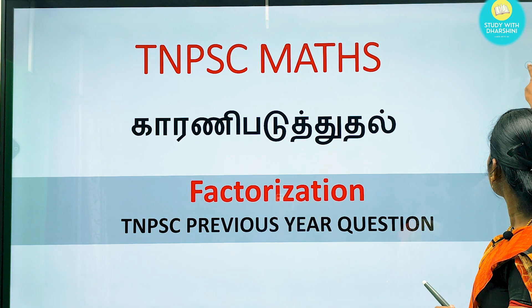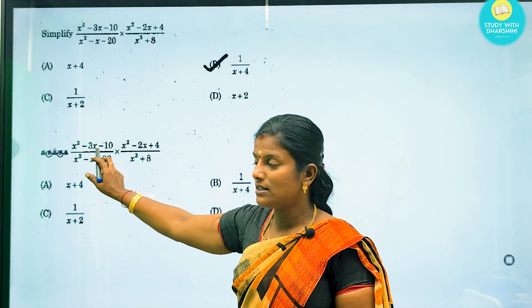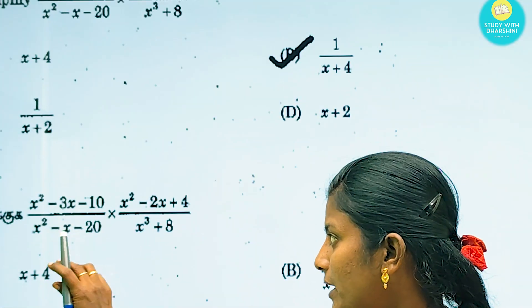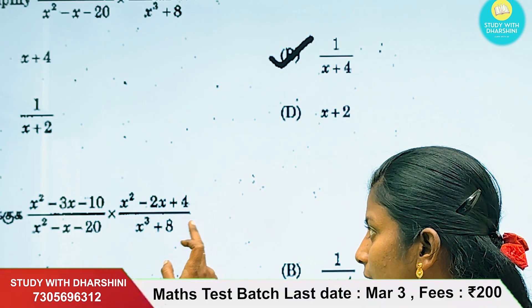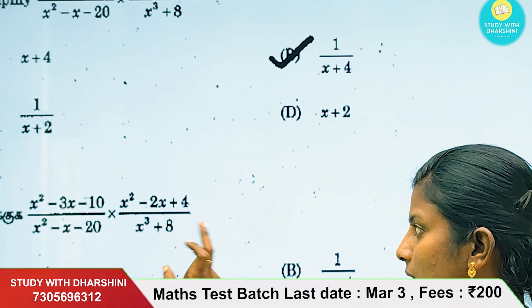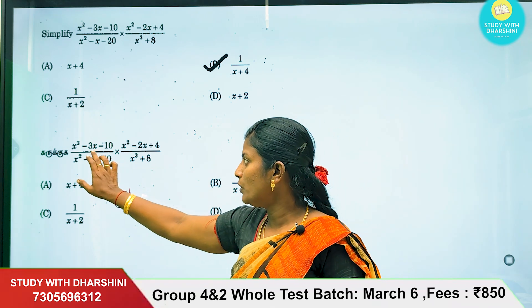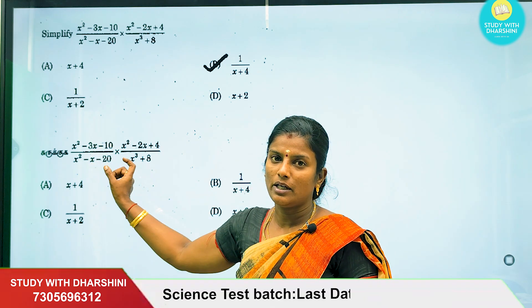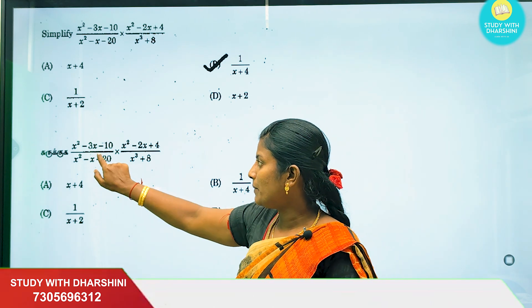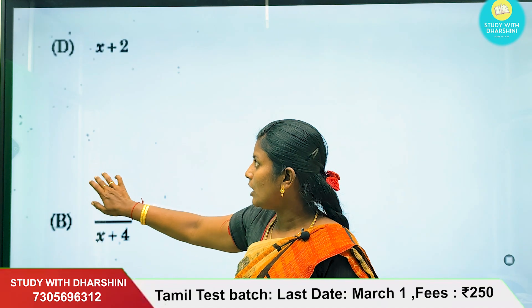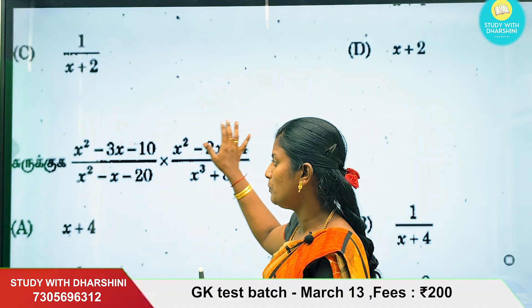In Factorization, the first problem is: x squared minus 3x minus 10, divided by x squared minus x minus 20, multiplied by x squared minus 2x plus 4, divided by x cubed plus 8. If we look at the numerator and denominator, we will solve the simplification of this equation.